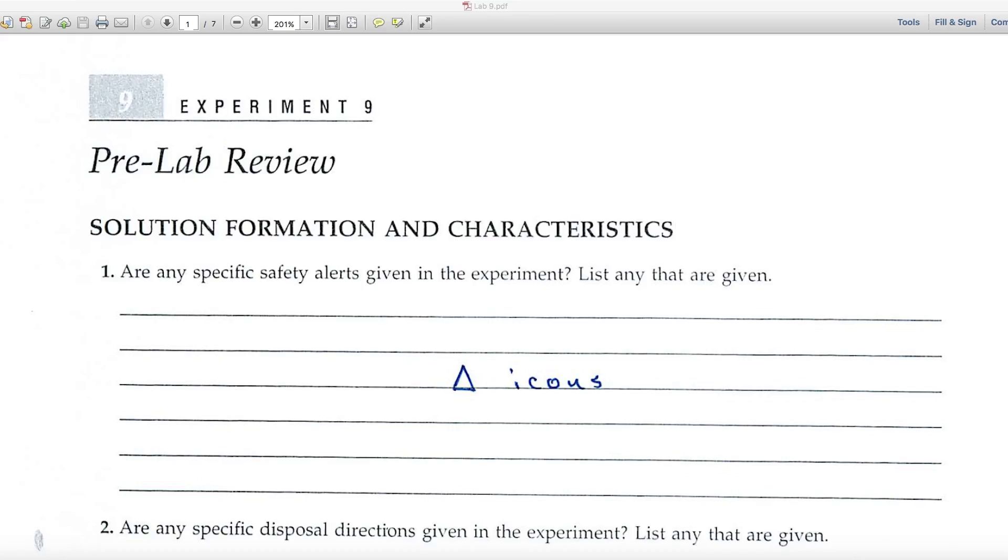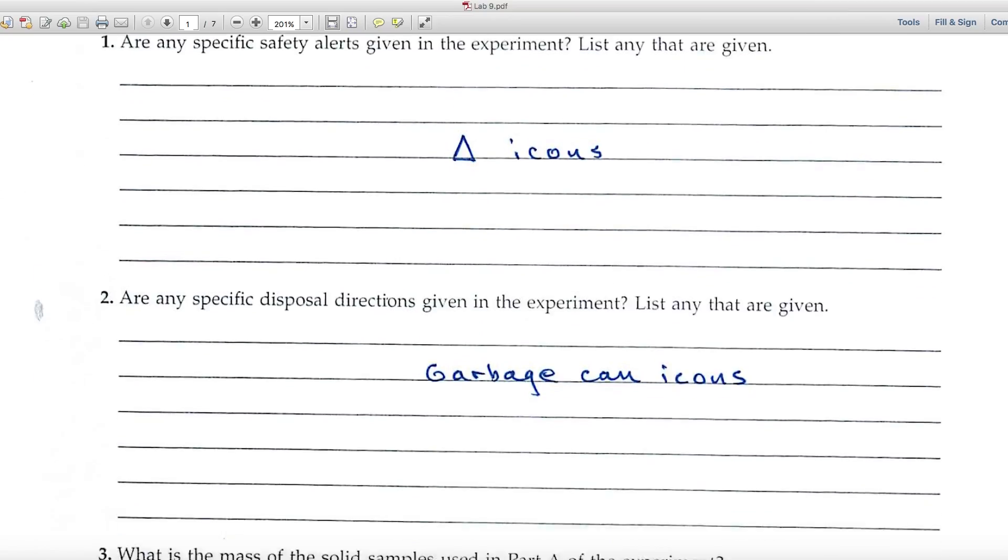This is experiment nine on solution formation and characteristics. Let's have a look at the pre-lab review page. First question deals with safety alerts. Remember to look for the triangle icons.